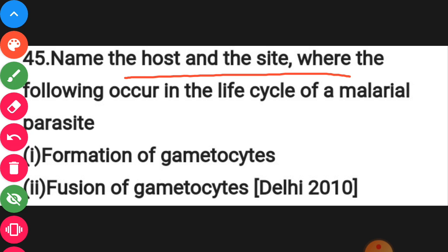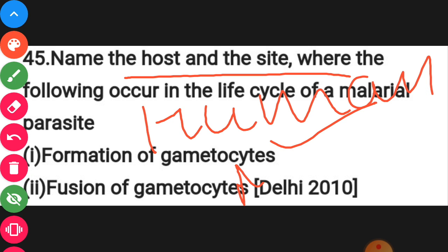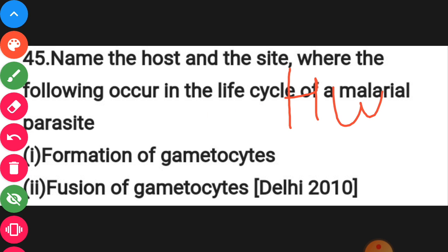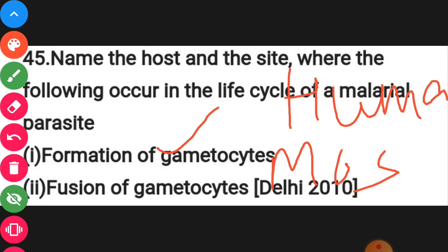Next, name the host and site: Plasmodium parasite completes its life cycle in two hosts — humans and mosquitoes. You have to mention where gametocytes and gametes are formed, either in the human body or in the mosquito. You also have to mention where the fusion of gametes takes place — whether in the mosquito or in the human.